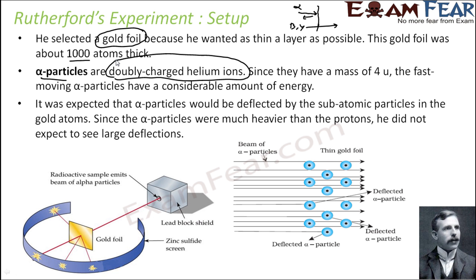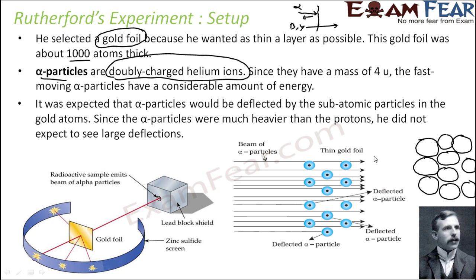It was expected that the alpha particles would be deflected by the subatomic particles. If we assume the Thomson model of the atom — a plum cake model — and bombard alpha particles at it, the expectation was that all alpha particles should bounce back. But this did not happen.